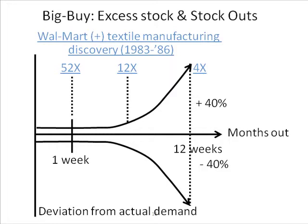I'll tell you a story. Back when Walmart was pioneering what they called continuous replenishment or quick response, first on a pilot test basis with the textile manufacturing industry from 1983 to 1986, they found out that if manufacturers would get product to the central distribution center just in time, and the central distribution center was doing cross-docking and could get it to the stores just in time.